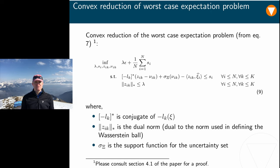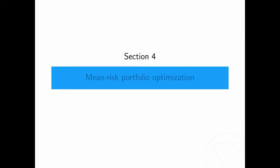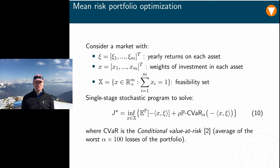Here we study a mean risk portfolio optimization problem. Consider a market of m assets that were bid short selling. Yearly returns of the assets are given by a random vector ξ with components ξ₁ up to ξₙ. The percentage weights of the total capital invested in each asset are given by a decision vector x with components x₁ up to xₙ, and this x belongs to the probability simplex X. Within such a market, our goal is to minimize a weighted sum of the mean and the conditional value at risk of the portfolio loss.